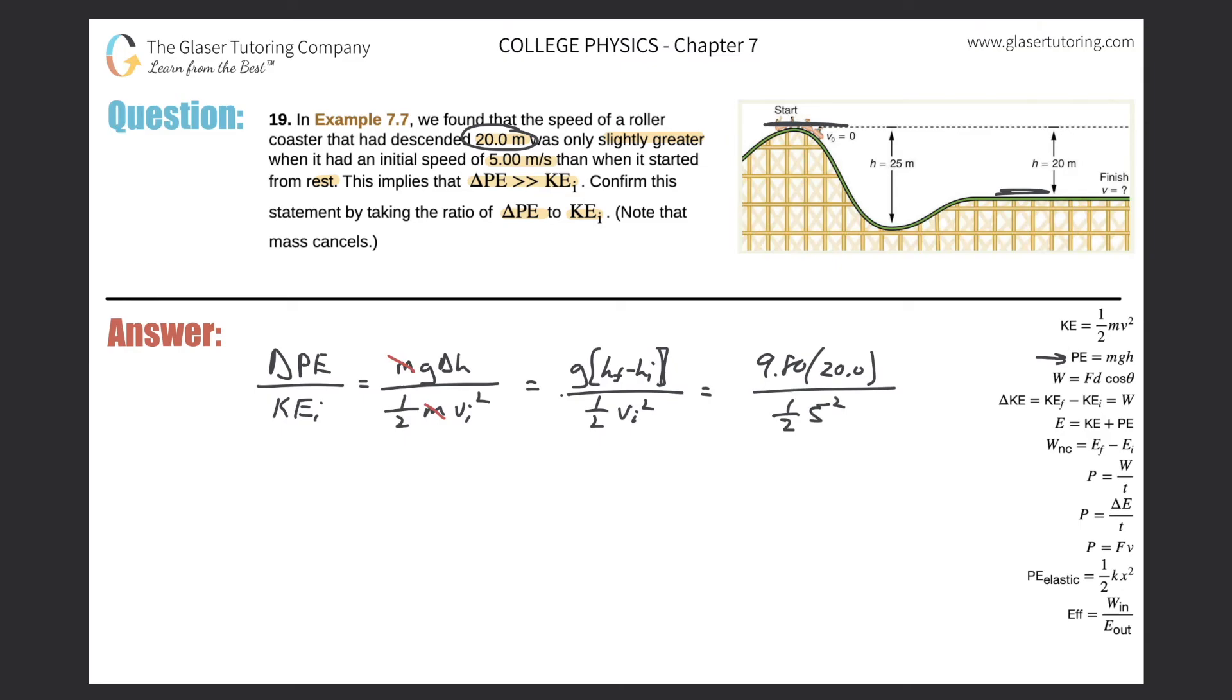And what do we get when we calculate that ratio? Let's see. So 9.8 times 20 divided by parentheses 0.5 times 5 squared, close those parentheses, and we get about 15.7.